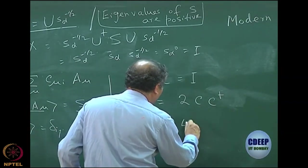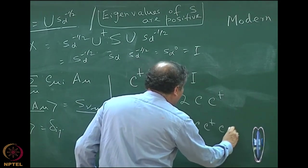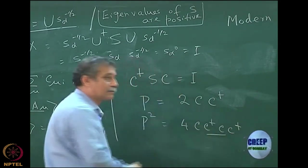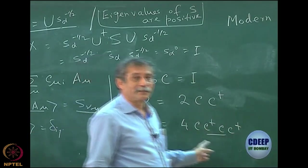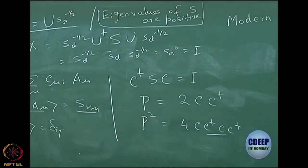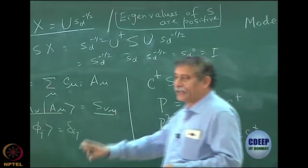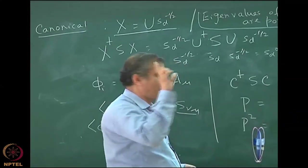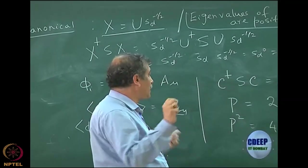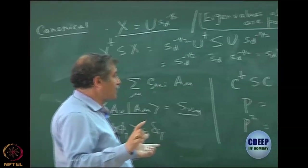If you do P², it becomes 4CC†CC†, and of course C†C is not the identity. And even if it were 1, this factor of 4 would have remained. So P² would not be equal to P because of this factor of 2, so it is quite clearly not an idempotent matrix. That is something you should get out of your mind, because many of you, the moment I write P, think projection operator — it is not really a projection operator.